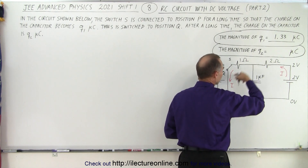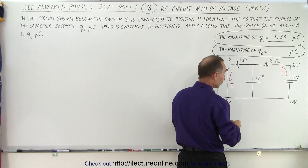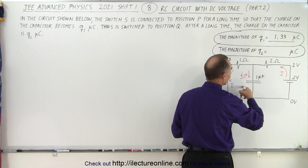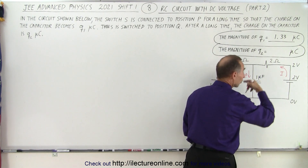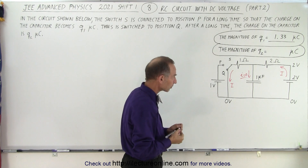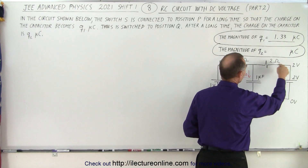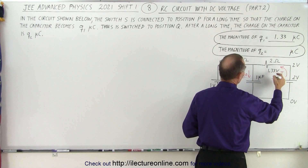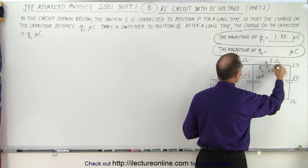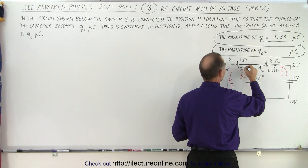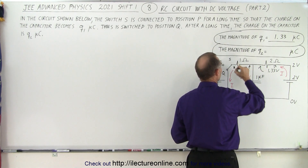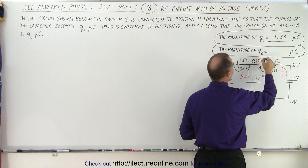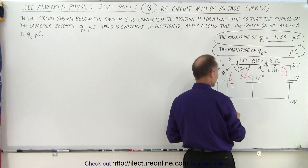Notice that two volts are dropped across the two resistors, because once we have steady state reached, the current I is going to be equal to zero. So two-thirds of two volts — which is 1.33 volts — is dropped across one section, and one-third of two volts — 0.67 volts — is dropped across the other. That gives us 0.67 volts at this node, which then drops back to zero.